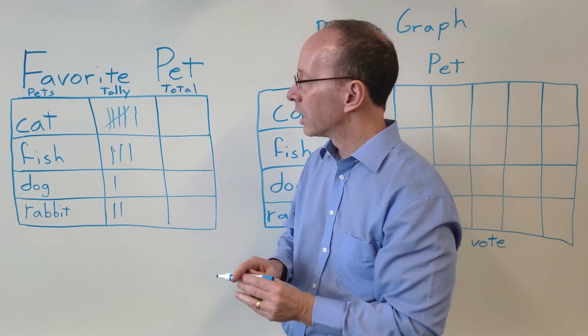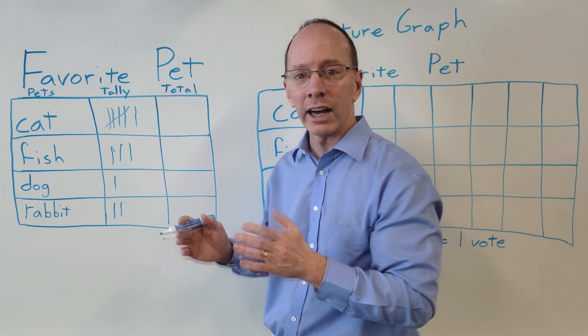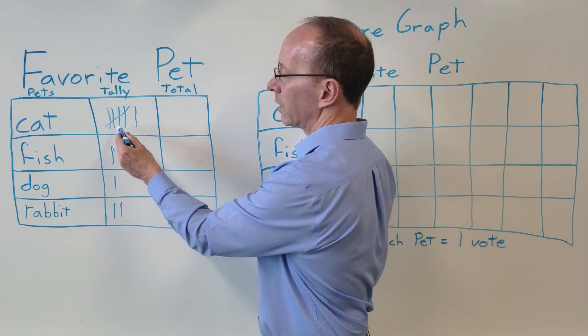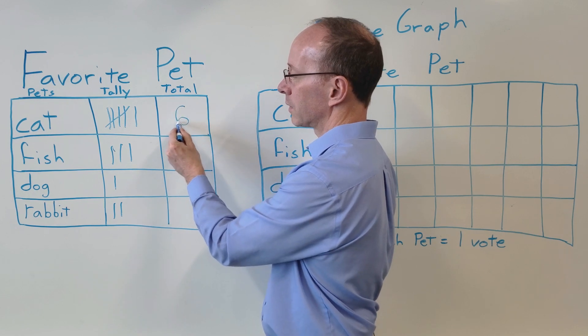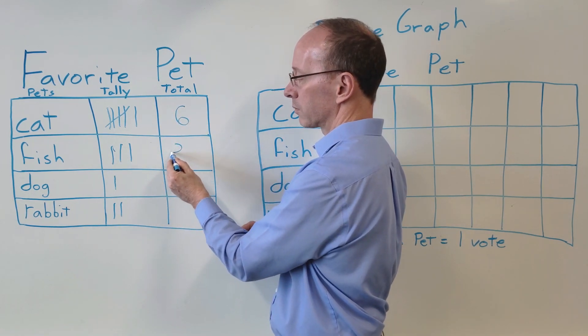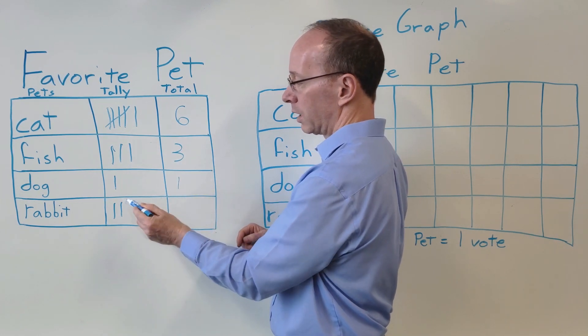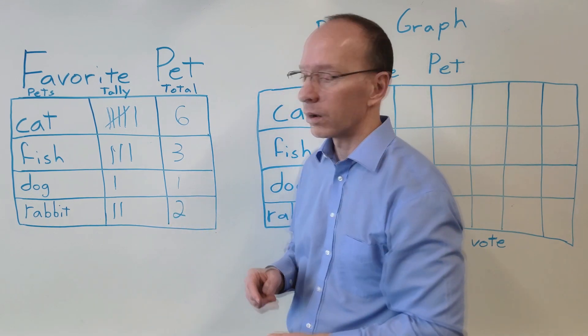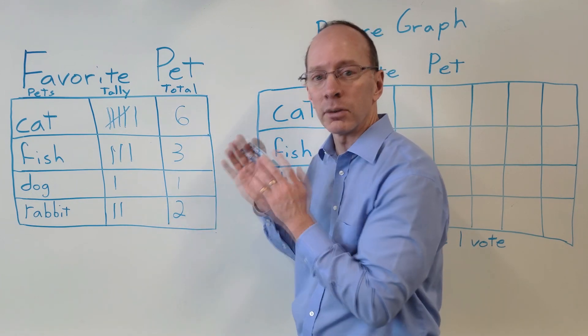So everybody voted on their favorite pet. What we're going to do now is we're going to count the tally marks. So we have a group of five here, so that's five and then plus one is six. Let's count these: one, two, three. Then we have one vote for a dog and two votes for rabbit. Now we have our information from our survey.